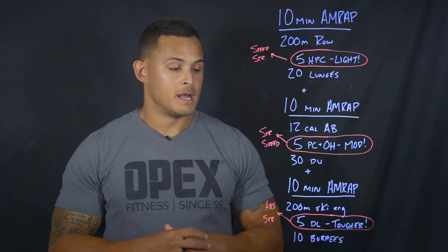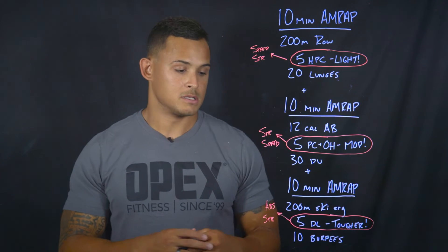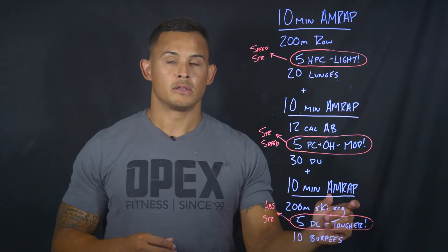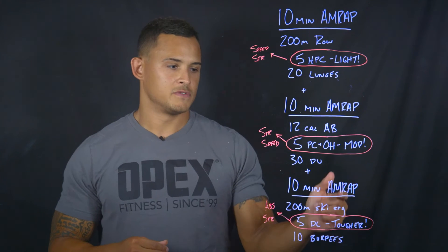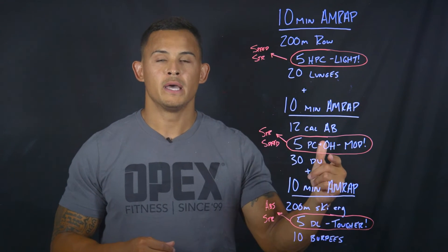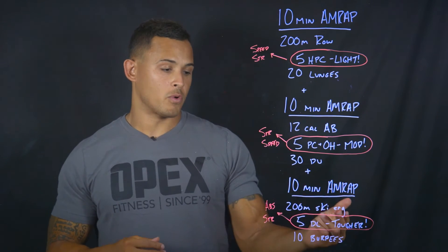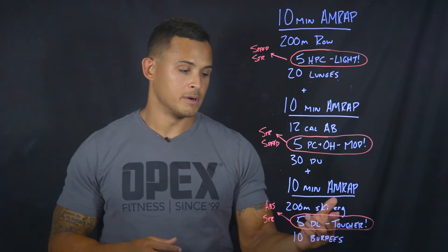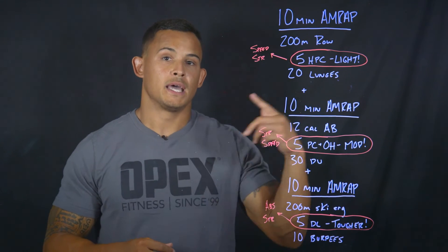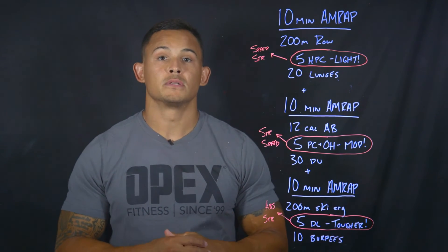The last 10-minute AMRAP focuses on deadlifts — five deadlifts at a tougher load. Don't think about this being tougher relative to the percentage used for the power clean to overhead; think about it being tougher in absolute load. So if your client has a 400-pound deadlift, maybe you're going with 225 pounds here for five deadlifts in this sustainable setting — this would be absolute strength.